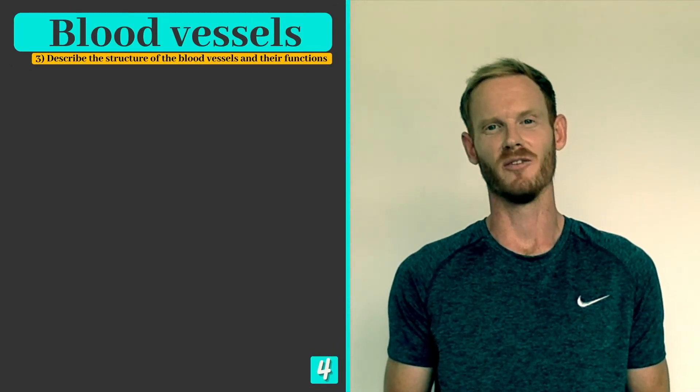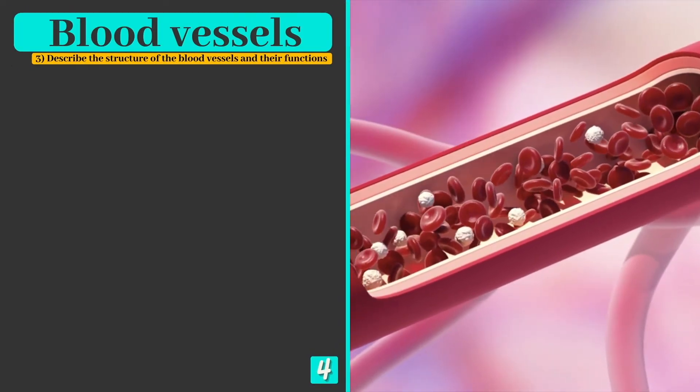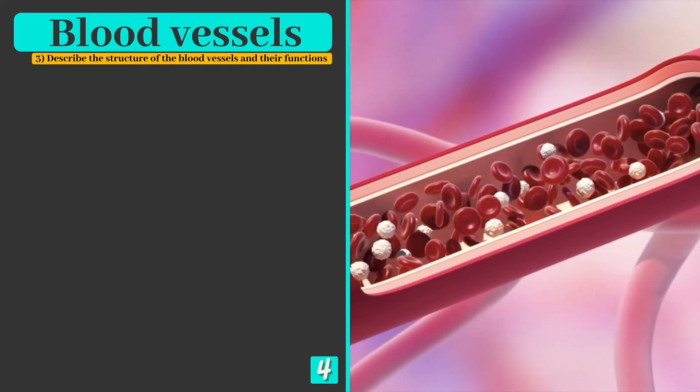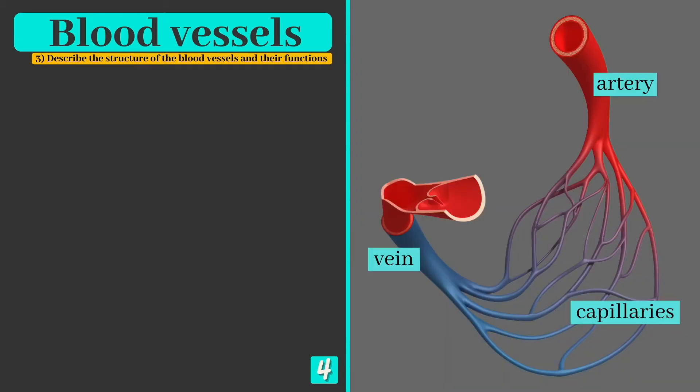So now that we've gained an understanding of the blood, we need to take a look at how it's transported around the body so that it can perform its functions. There are three groups of blood vessels that work together to form a vast network throughout the body.